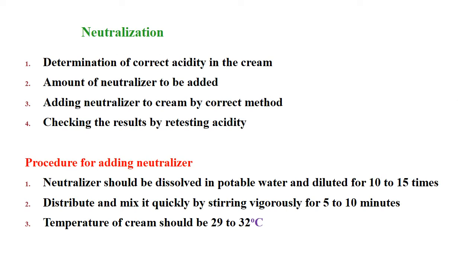Once the cream is accepted, the next important step is neutralization, as the cream will often be acidic. Determination of correct acidity in the cream is important, followed by calculating the amount of neutralizer to be added, adding it by the correct method, and checking the results by retesting acidity. The procedure: neutralizer should be dissolved in potable water and diluted 10 to 15 times, then distributed and mixed quickly by stirring vigorously for 5–10 minutes. Temperature of cream should be 29–32°C.